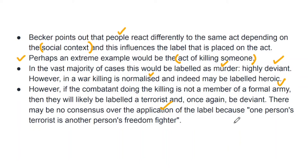So here, killing in war is labeled as heroic. But if the person doing the killing is not a member of a formal army, they will likely be labeled as a terrorist. So all three — the murderer, the soldier, and the terrorist — are killing, but each has been given a different label based on social context. There may be no consensus over the application of the label. For example, someone we consider a terrorist because they are attacking our country — for us they are a terrorist, highly deviant. But for the country or group they come from, they are a hero, not deviant at all.